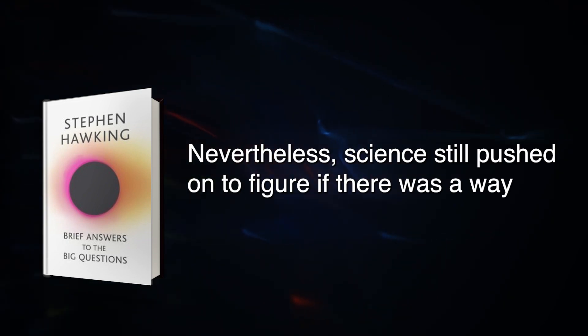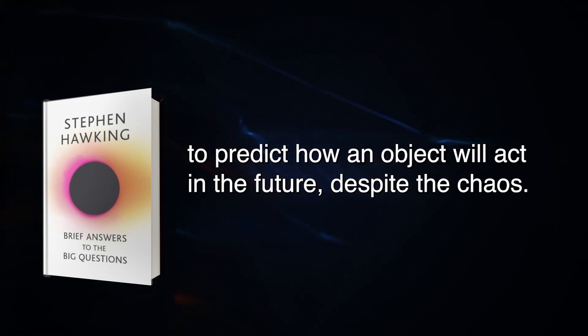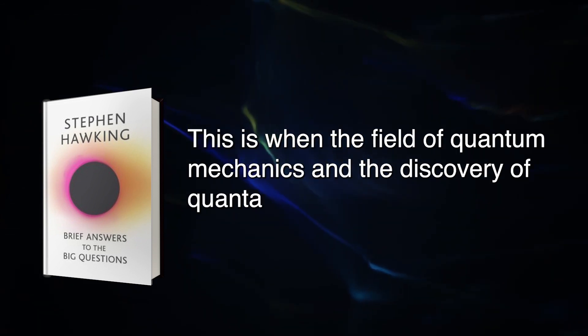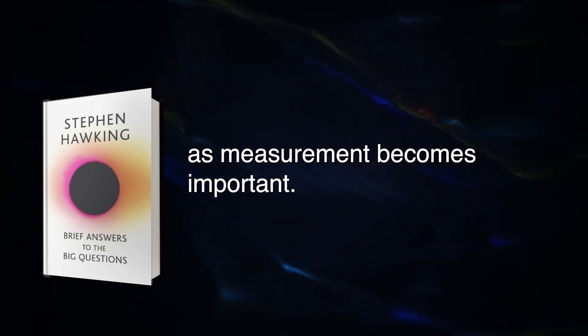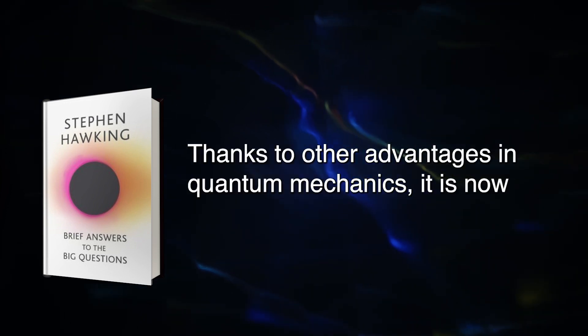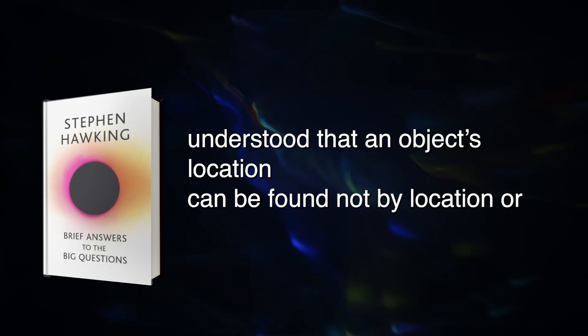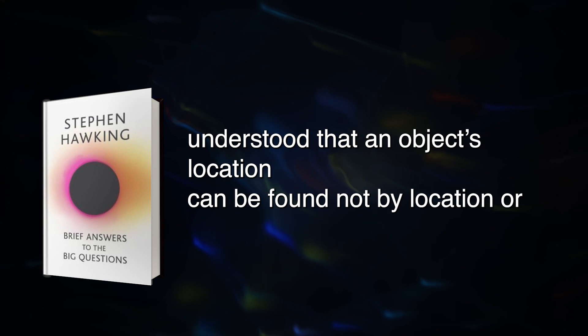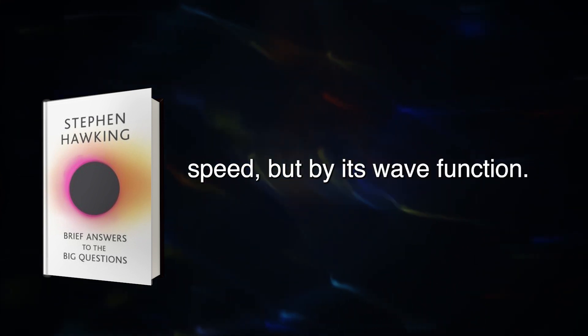Nevertheless, science still pushed on to figure if there was a way to predict how an object will act in the future, despite the chaos. This is when the field of quantum mechanics and the discovery of quanta as measurement becomes important. Thanks to advances in quantum mechanics, it is now understood that an object's location can be found not by location or speed but by its wave function.